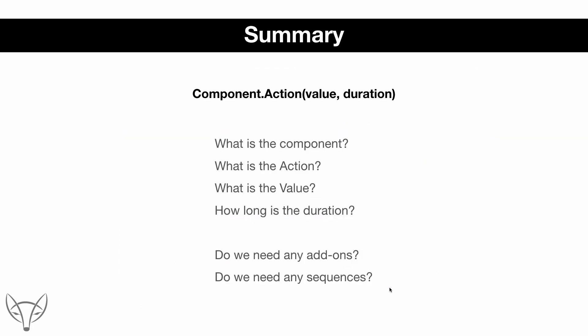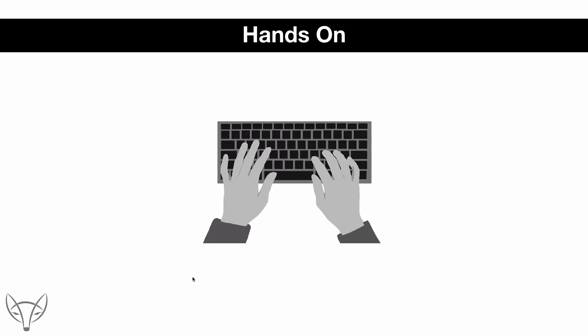Let's summarize. The questions you should ask when making animations with DoTween are: what is the component, what is the action, what is the value, and how long is the duration. Sometimes you also need to ask: do I need any add-ons, and do I need to combine several simple animations into more complex ones using sequences? Now let's go to Unity and do some hands-on.